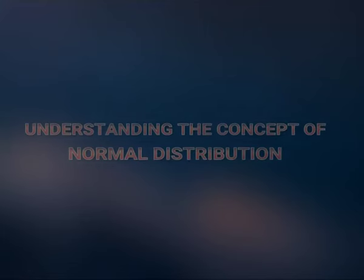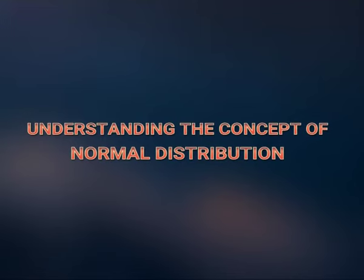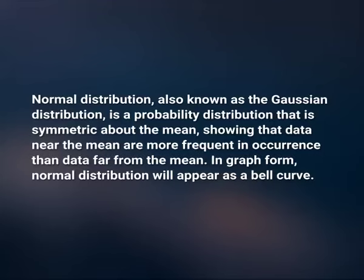Dear students, let us start with understanding the concept of normal distribution. The normal distribution is also called the distribution of continuous random variable. So far, we have been concerned with discrete probability distributions. In this section, we shall turn to cases in which the variable can take on any value within a given range and in which the probability distribution is continuous. Normal distribution, also known as the Gaussian distribution, is a probability distribution that is symmetric about the mean, showing that data near the mean are more frequent in occurrence than data far from the mean.